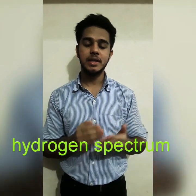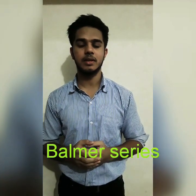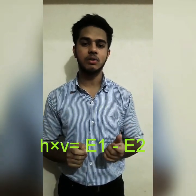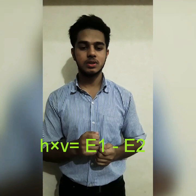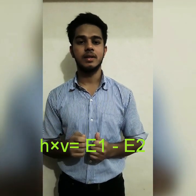The radiated frequency can be UV, infrared, or visible. These frequencies are compiled in a series known as the hydrogen spectrum. There are many series like the Balmer series, Lyman series, and many others. He gave this by an equation: hν = E1 minus E2, where h is the Planck constant, ν is the frequency, and E1 and E2 are the initial and final energy levels of the electron.